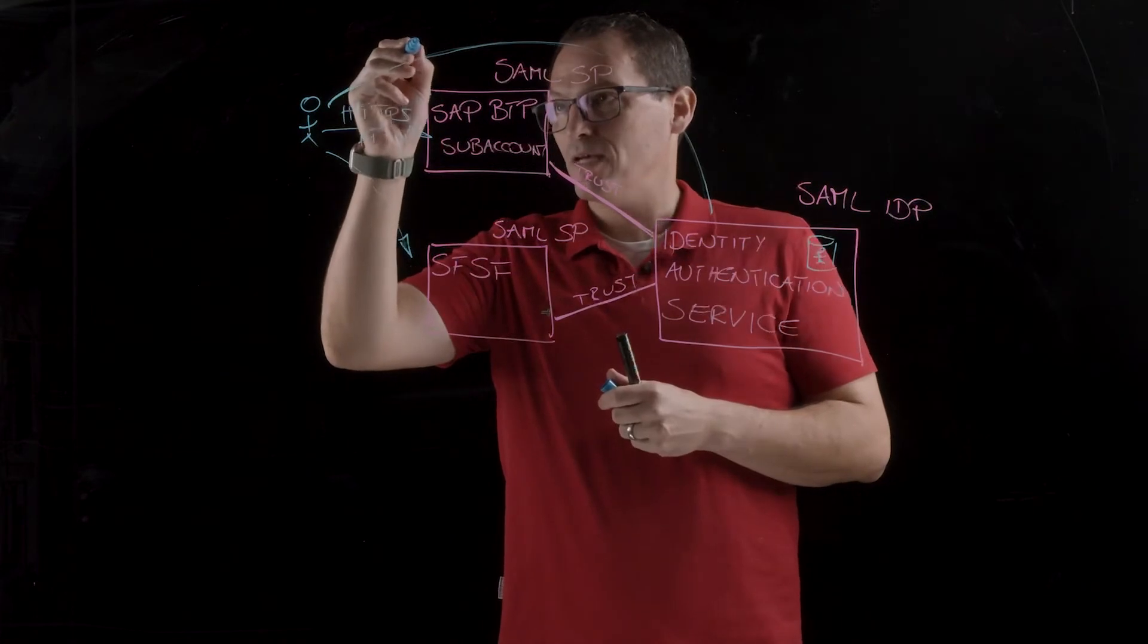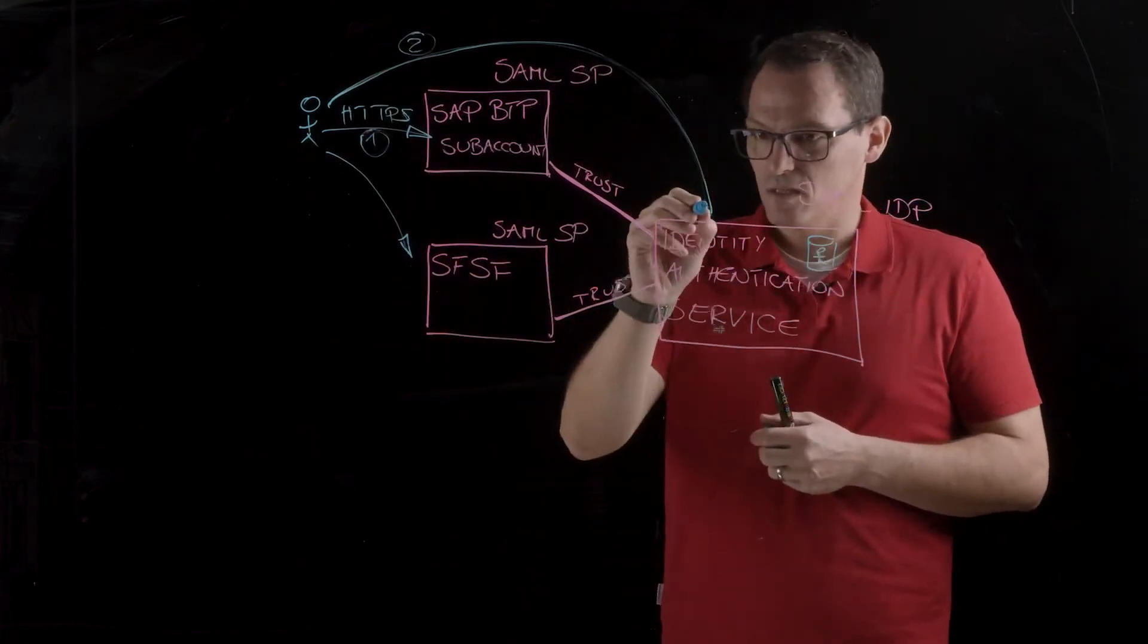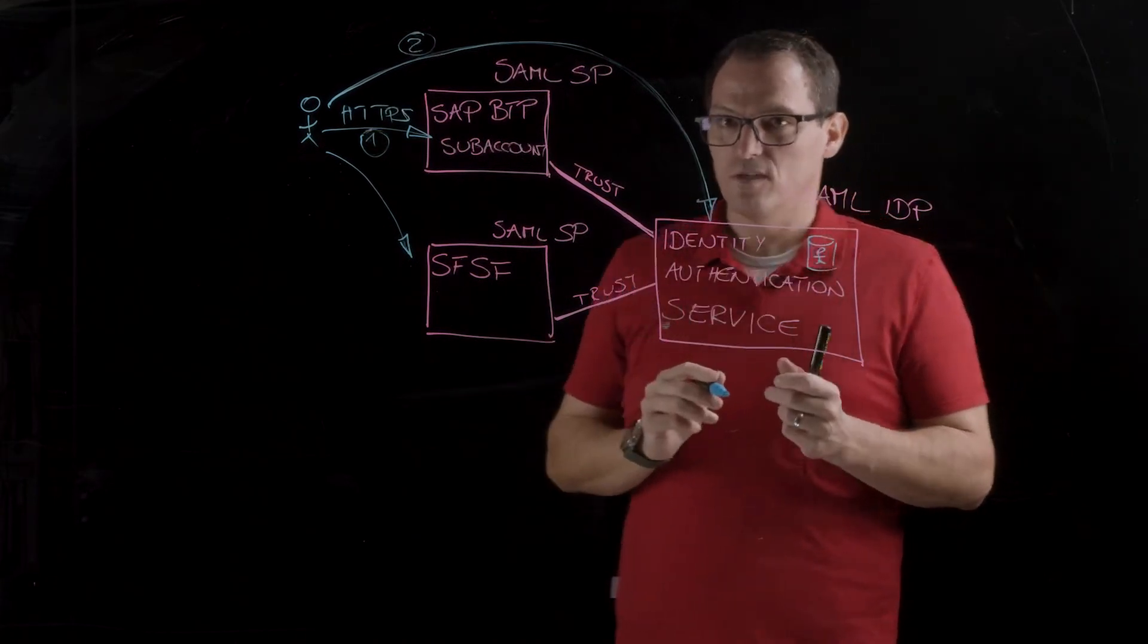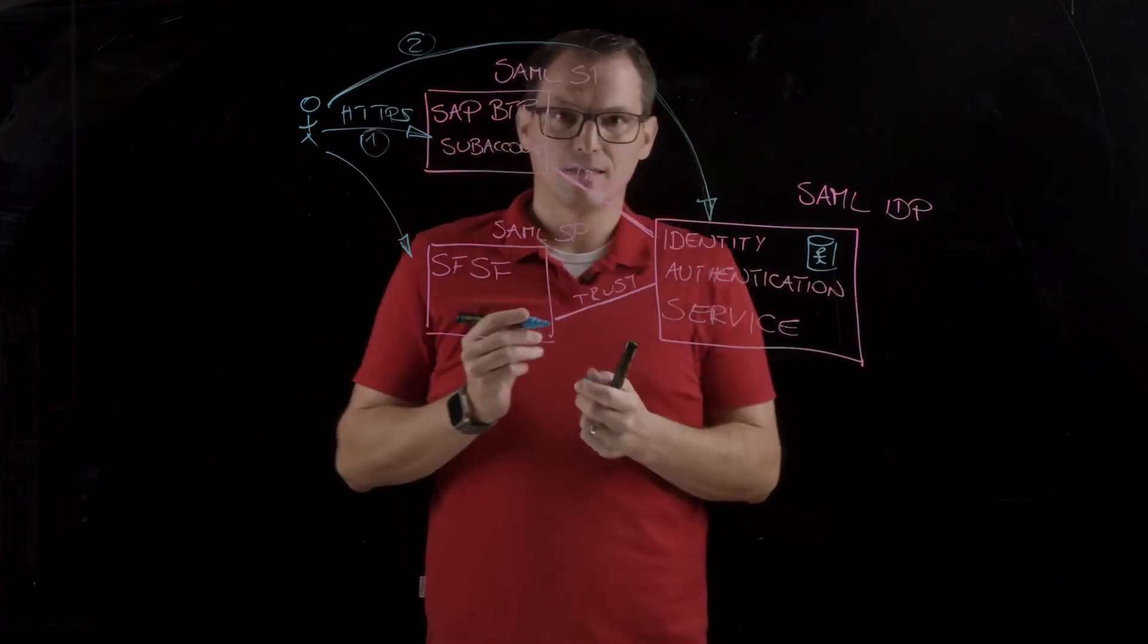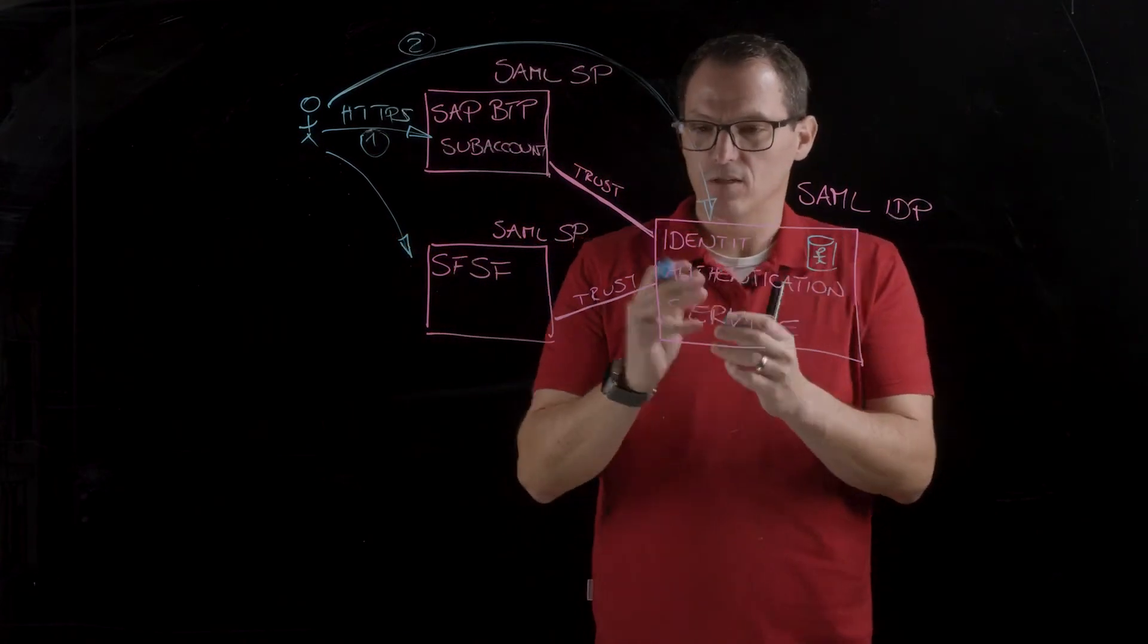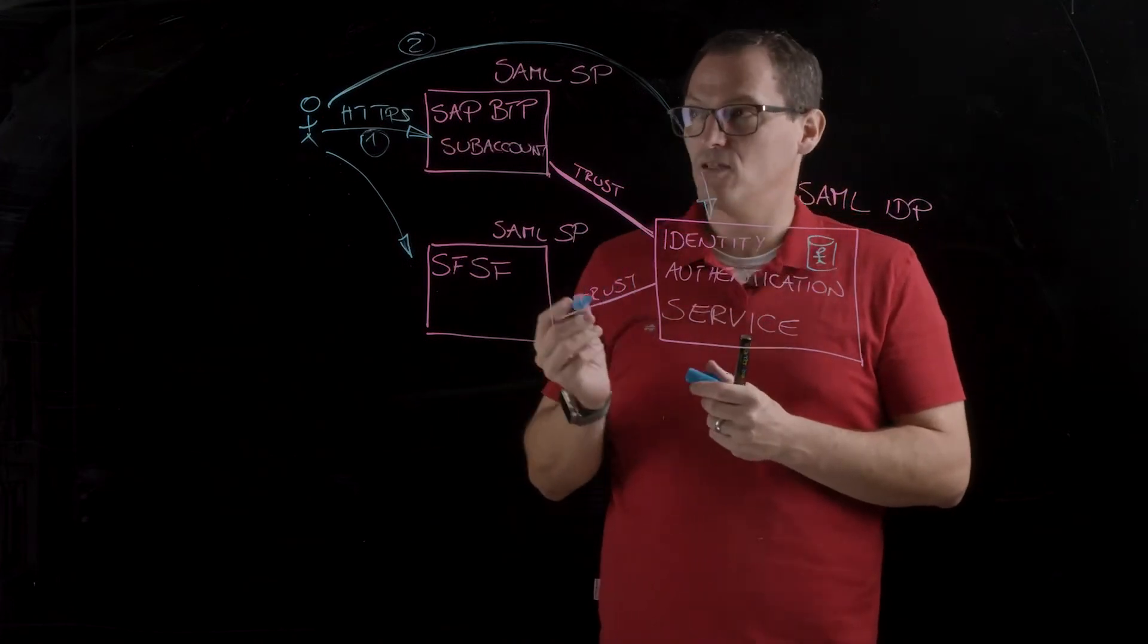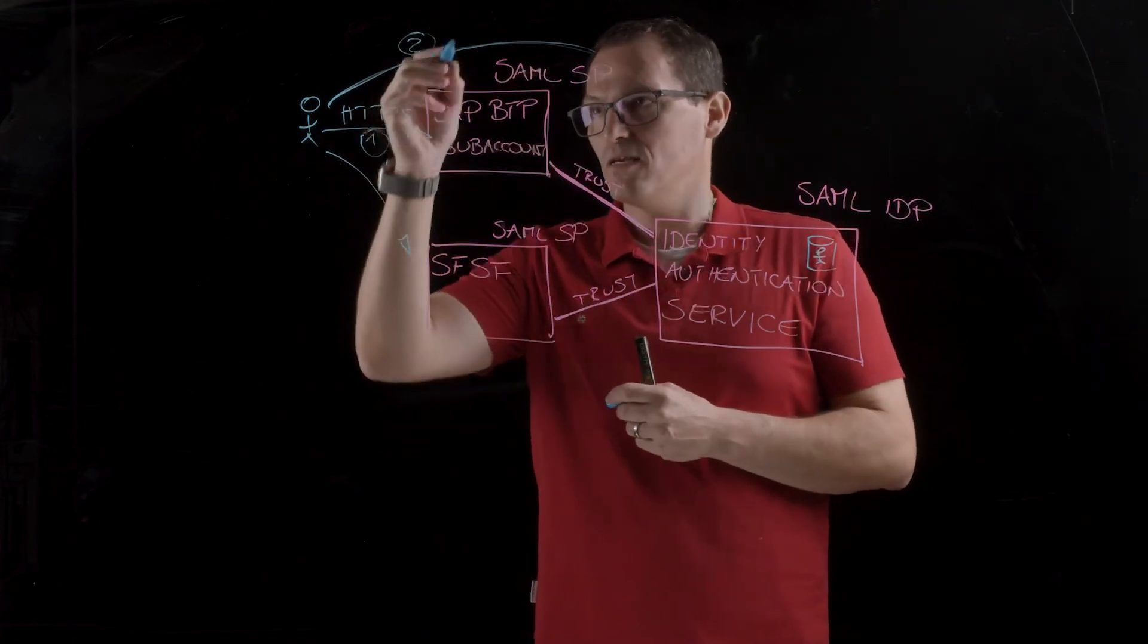Just a second. Then, you get the redirect to the identity authentication service. You authenticate against the service with your username and your password. And then, you get back a SAML response containing all your group assignments and also the information, of course, if you are authenticated or not. And finally, you can access the solution itself. So, you get a response with this ticket.